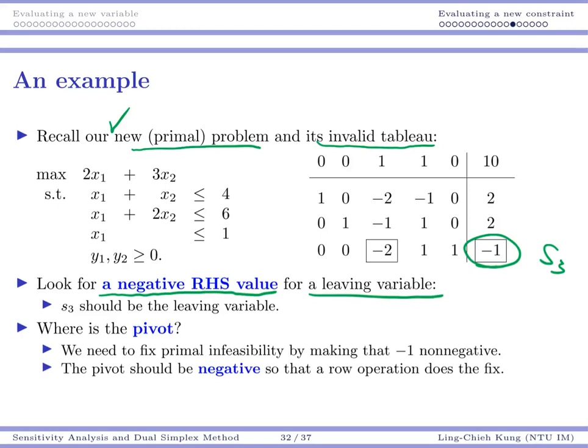This tells us a leaving variable: our s3 should leave the basis because including it in the basis we do not have a basic feasible solution. Then we need to look for a pivot. In this particular example, it's easy. If you think about this, you see that you have two options. Your non-basic variables are s1 and s2, one of them should enter. There's no chance for you to look at the others, and obviously you're going to choose the one with a negative number here because you're going to do some ratio test.